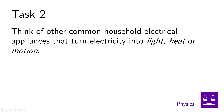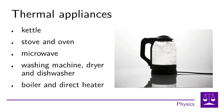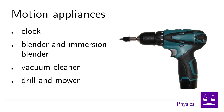In the second task, we have to identify other common household electrical appliances that convert electricity into light, heat, or motion. Light appliances include, for example, a light bulb, a fluorescent lamp, a TV set, or a monitor. Thermal appliances include an electric kettle, cooker, oven, microwave, washing machine, tumble dryer, or dishwasher. Motion appliances include a hand clock, a blender, an immersion blender, a vacuum cleaner, a drill, or a lawn mower.